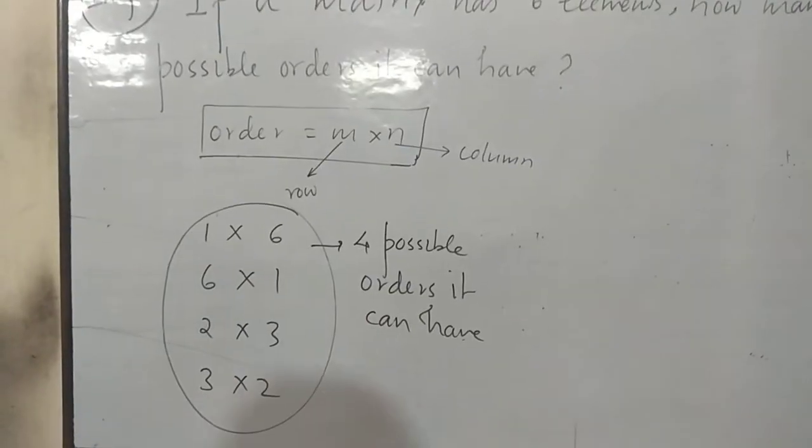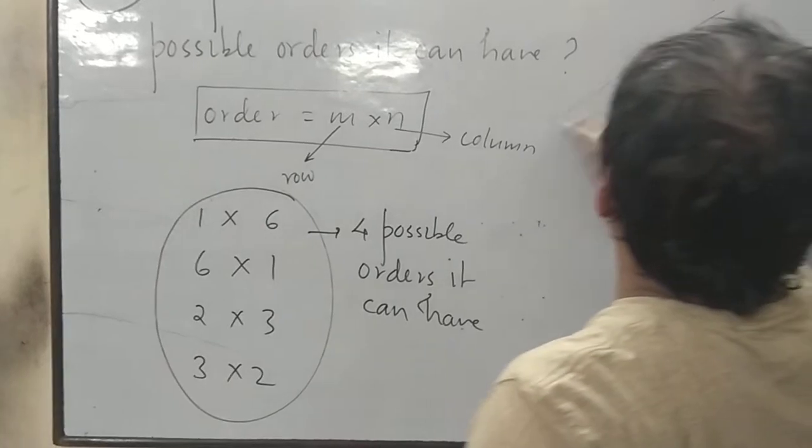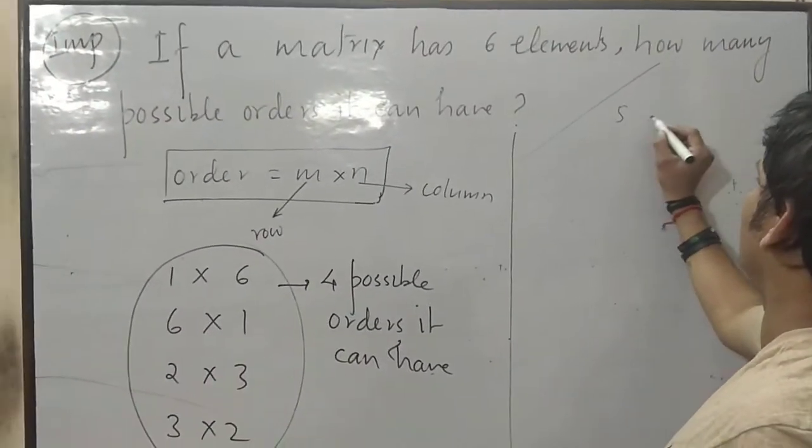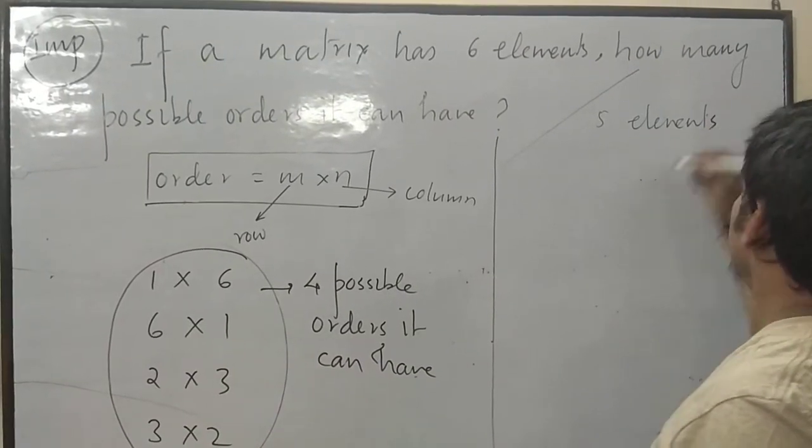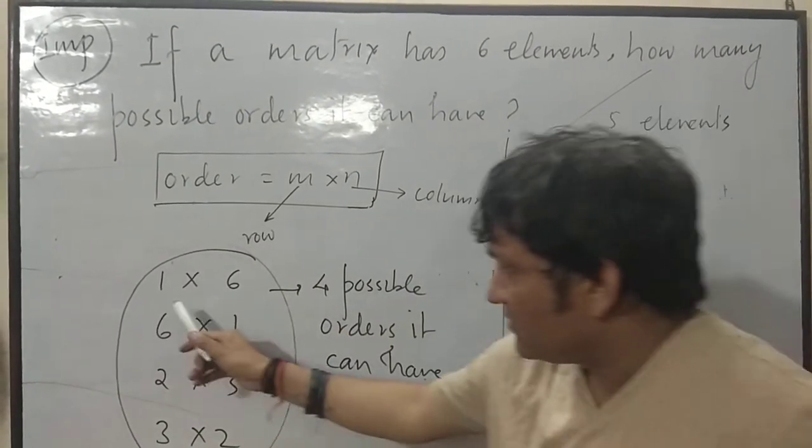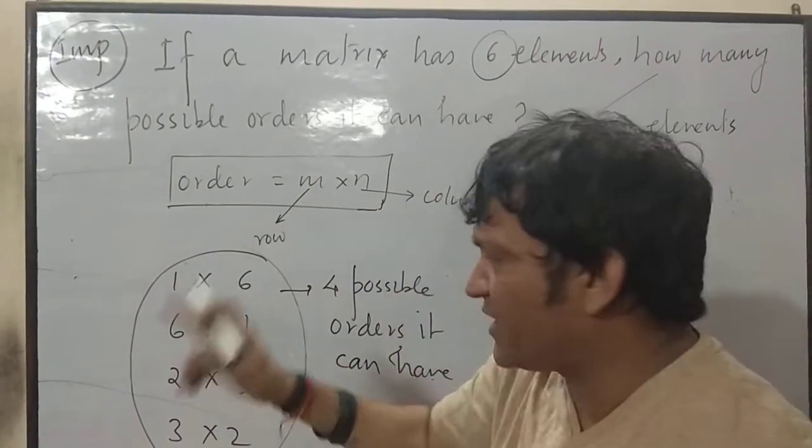Now, if suppose I am giving you a question. A matrix has 5 elements. How many possible orders? Here one second I am coming. Two elements to multiply.